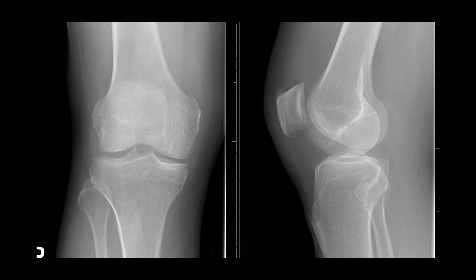We're going to review the anatomy of the knee using a knee arthrogram, but before we get to the arthrogram I think we should review the anatomy on X-rays. On the left we have a frontal view of the knee and on the right we have a lateral view. The major osseous structures are the femur, the patella, the tibia, and the fibula. The fibula is located laterally within the leg, so this will be the lateral aspect of the film and this will be the medial aspect.